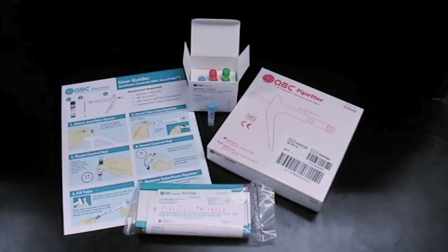You will need the following items. From your beta test kit, you will need a vial of QVC Synthetic Control, an Accutube with Float Enclosure, and a QVC Pipetter with Accutube Spacer.